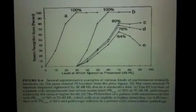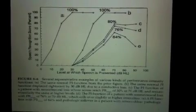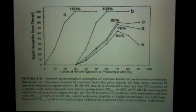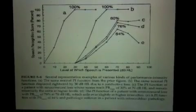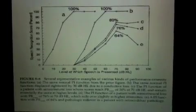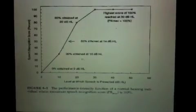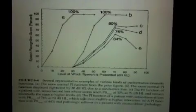We can also look at PI functions in listeners with different types of hearing loss. Now, these are all simulated. Obviously, individual listeners would show slightly different PI functions. Function A is similar to what we saw back here, an idealized function for a normal hearing listener.